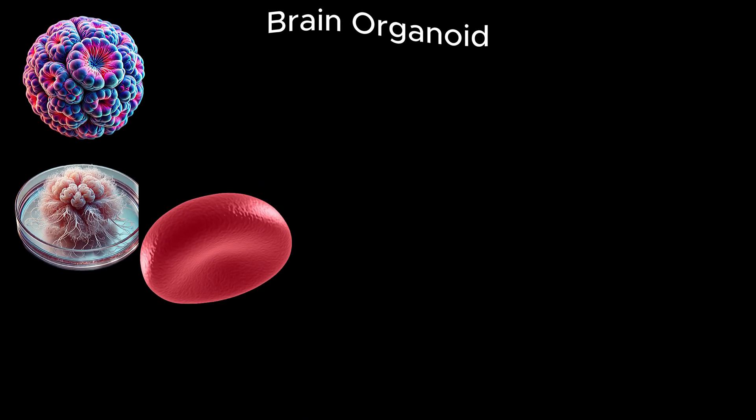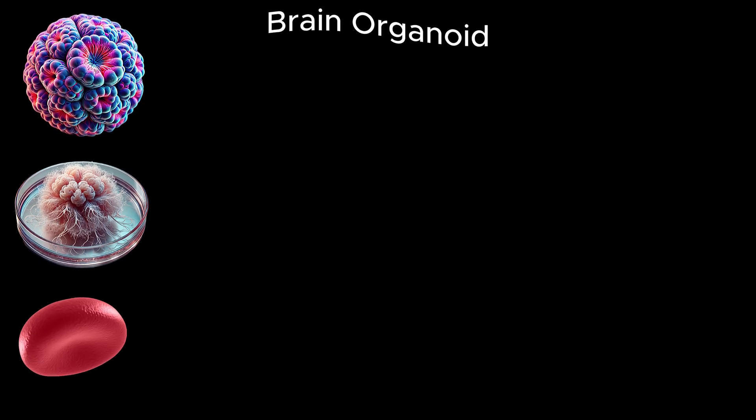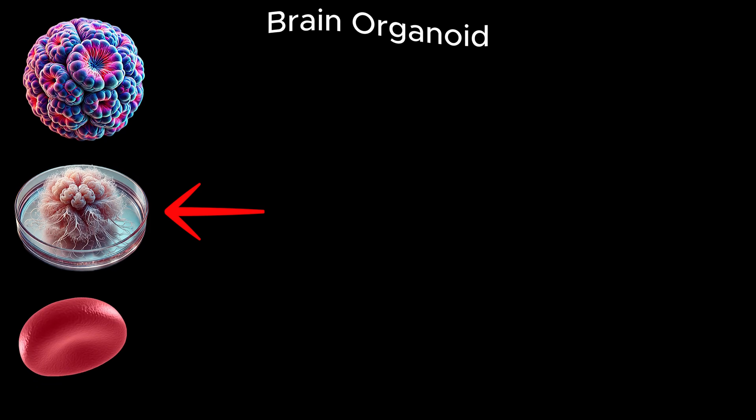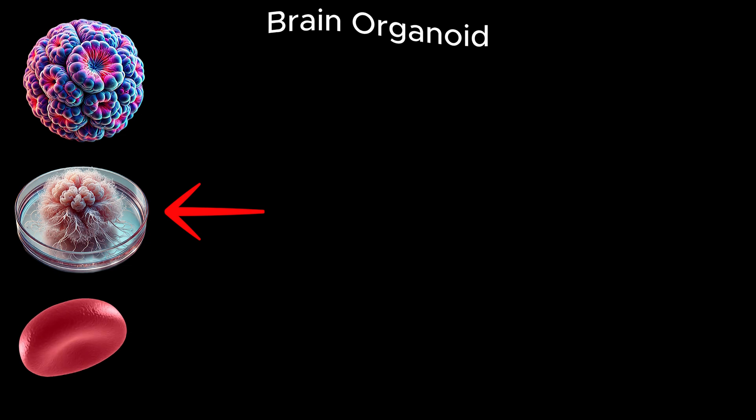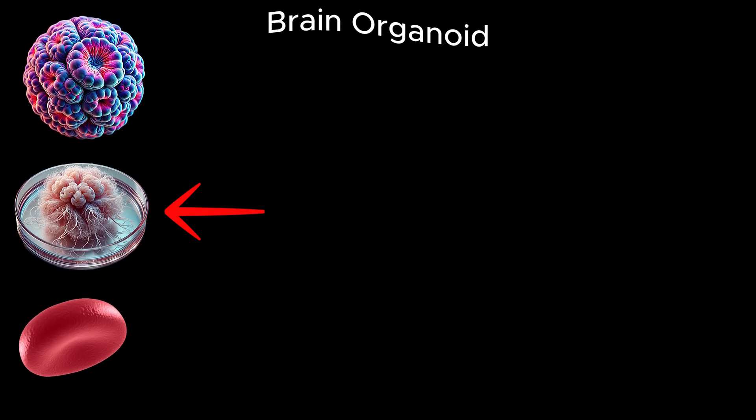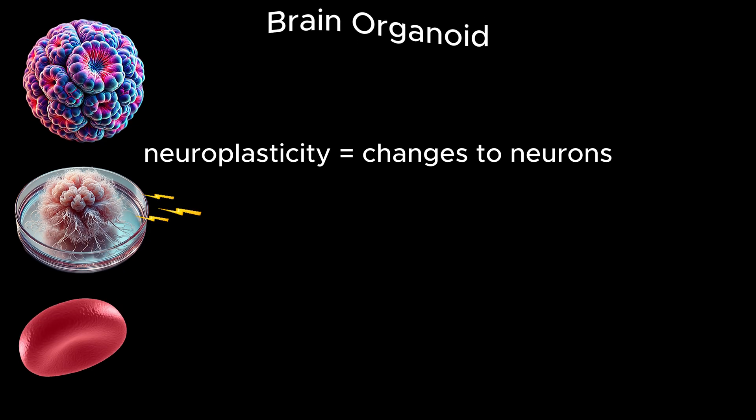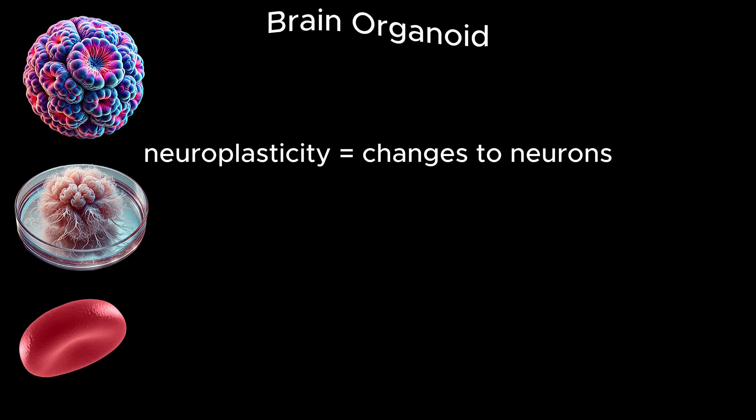In the lab, scientists guide these stem cells to self-organize into three-dimensional structures that resemble parts of the brain. While they're not fully functional brains, brain organoids contain neural networks, interconnected neurons capable of transmitting and processing signals. Over time, these networks adapt and rewire themselves in response to stimuli, a process known as neuroplasticity.